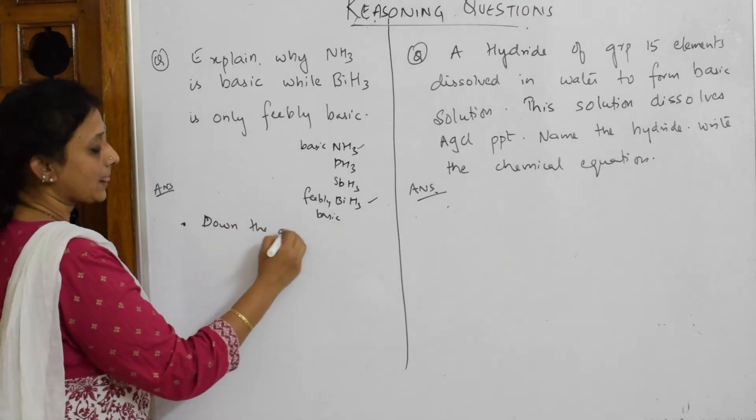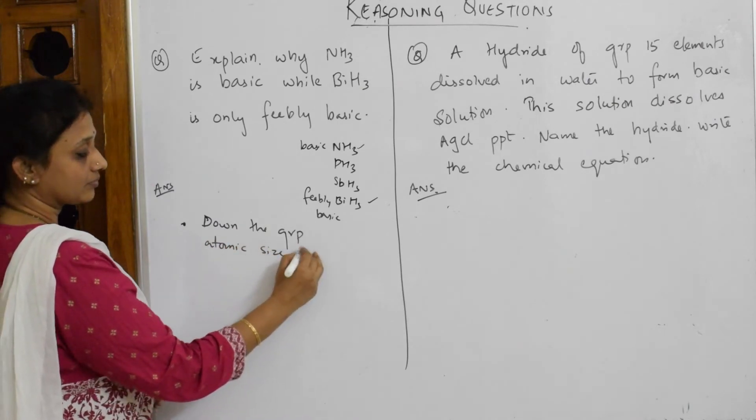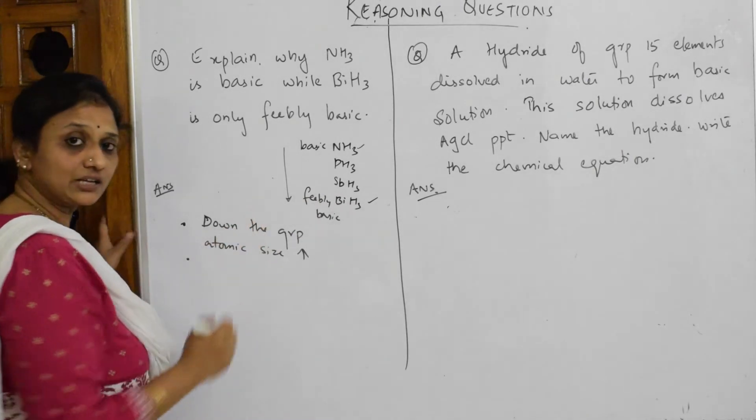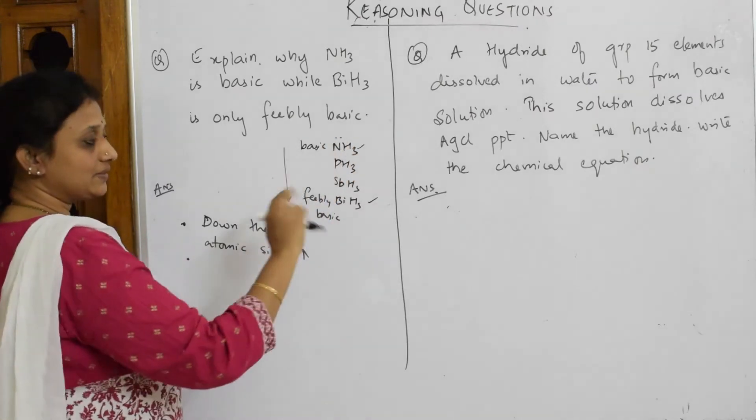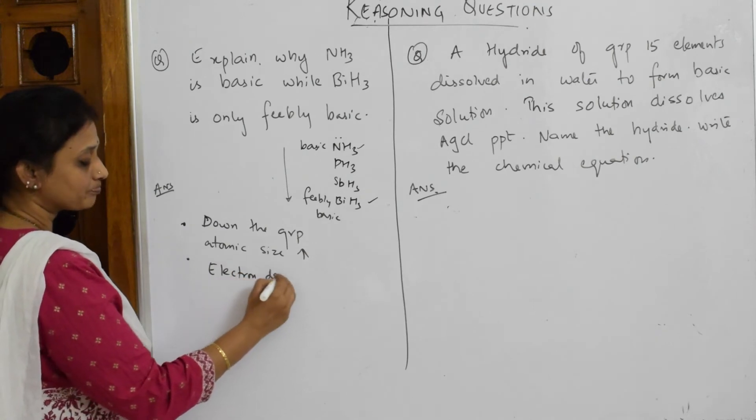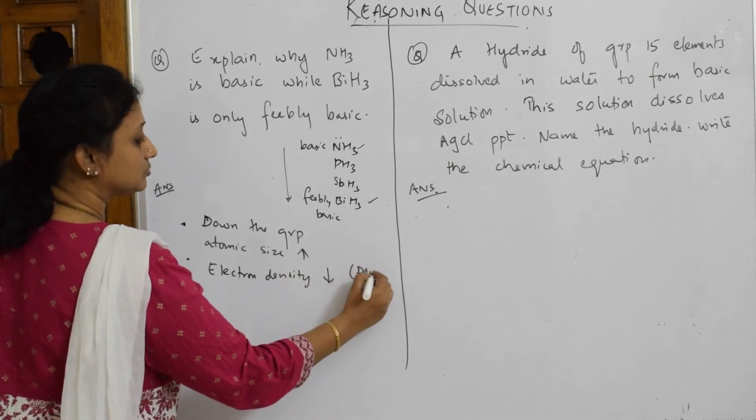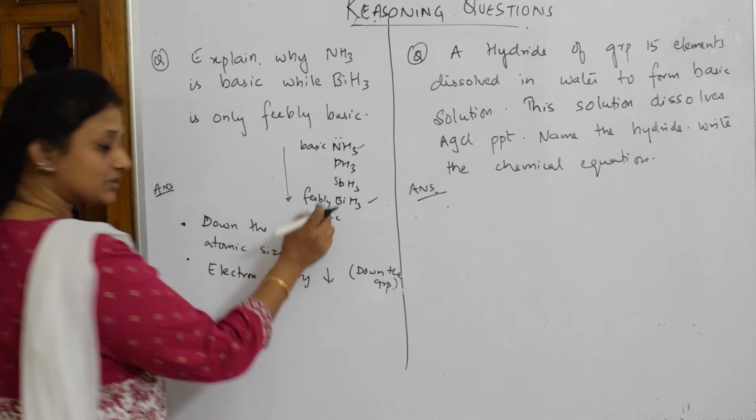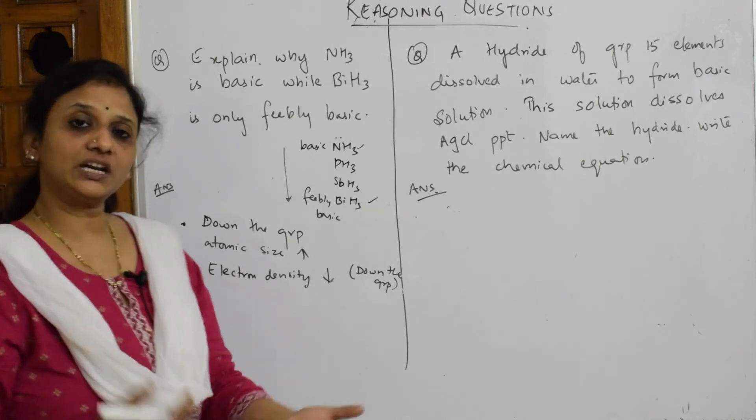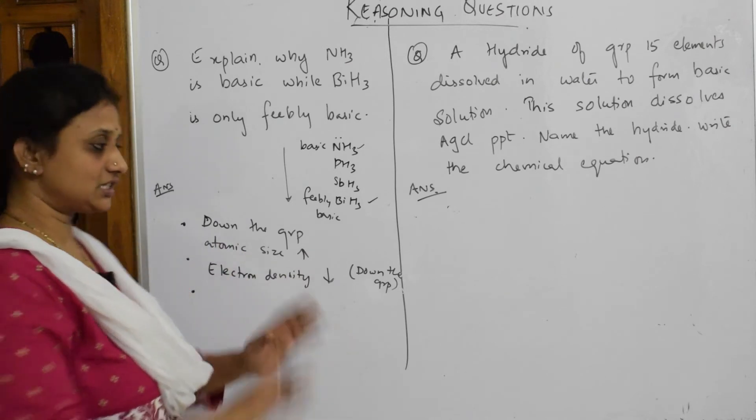Atomic size increases down the group. When atomic size increases, what will happen to the electrons present on nitrogen as a lone pair? The electron density on bismuth decreases. Electron density decreases down the group. When electron density decreases, because the size is increasing, the electron cloud is spread all over. When electron density decreases, donation of electrons decreases.